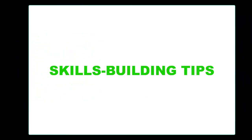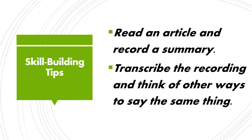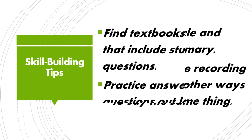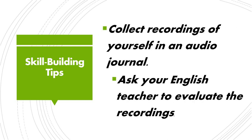Here are some activities to help you build your skills for the integrated speaking tasks, especially Questions 4 and 6 about academic courses. Develop your academic vocabulary and keep a list of new words — practice pronouncing them. Read an article, record a summary, then transcribe the recording and think of other ways to say the same thing. Find English textbooks that include study questions and practice answering them out loud. Collect recordings of yourself in an audio journal and ask your English teacher to evaluate them.